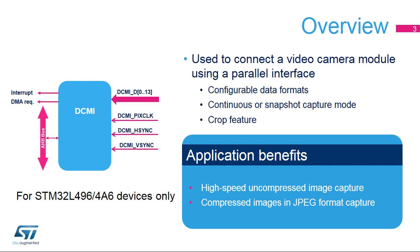The DCMI is used to perform continuous grabbing. This process starts with an application request and continues until the capture bit is cleared. Alternatively, snapshot mode is used to capture a single frame upon an application request.